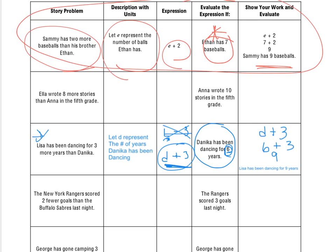So, we're going to use this framework for the next one down below of how we're going to solve this. So, we'll take a look at the fourth one down, which is the New York Rangers. The New York Rangers scored two fewer goals than the Buffalo Sabres last night. And before I go to do my description with the units and the expression, I'm going to take a look at the fourth column and see which unit we're talking about. And it says, the Rangers scored three goals. So, my units are going to be, or my statement will be, for this description with units, about the Rangers.